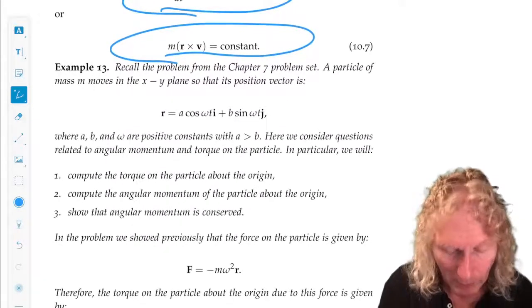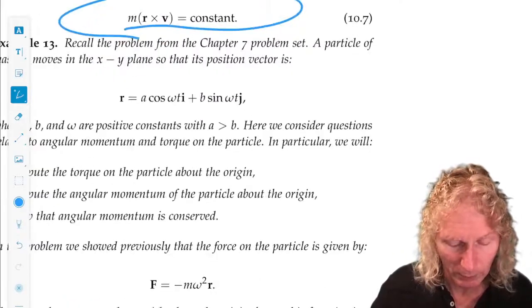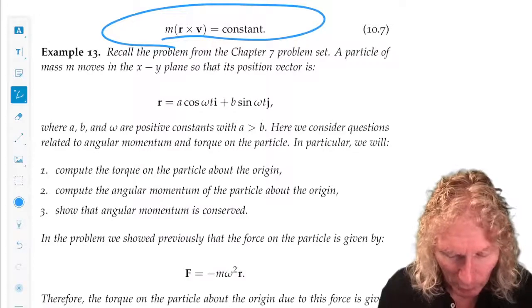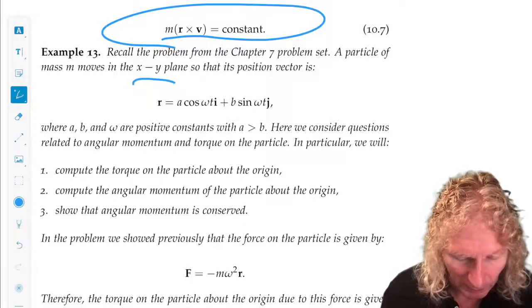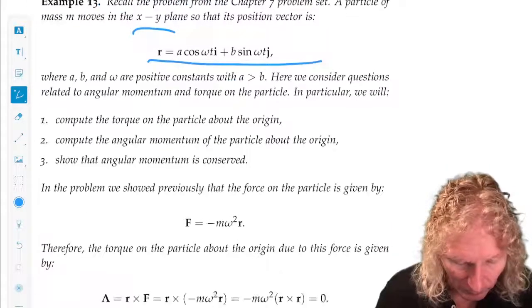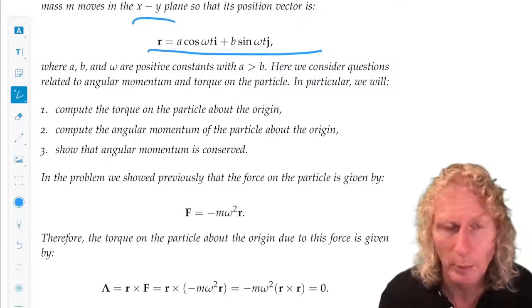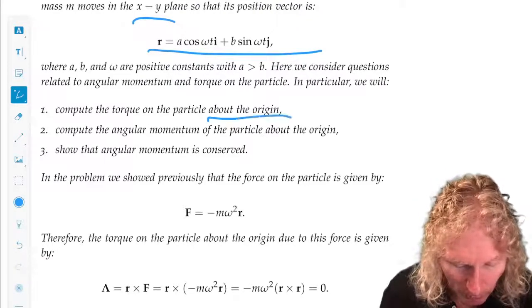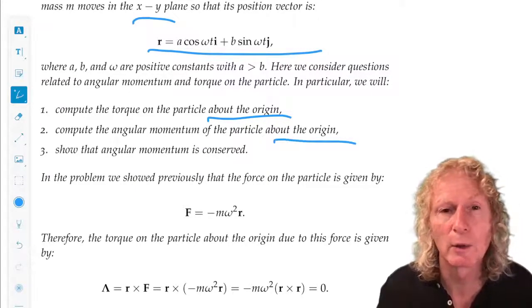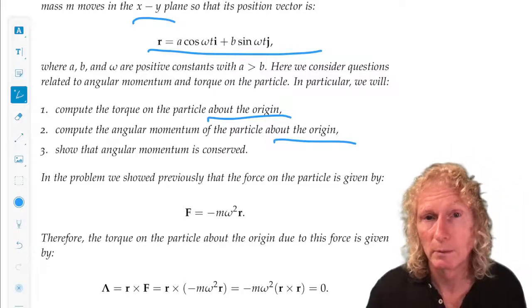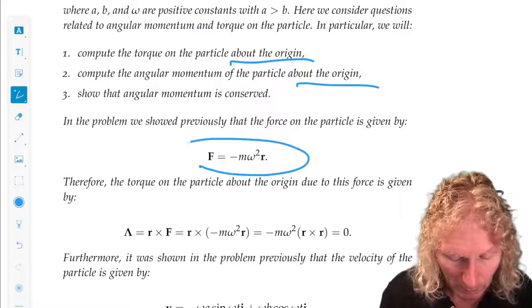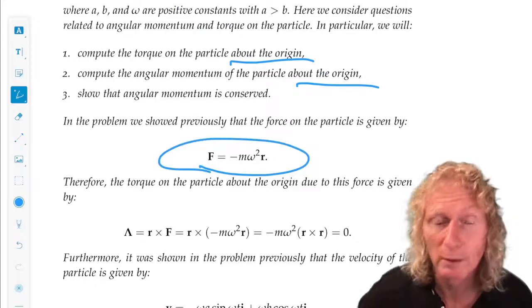Let's look at an example. We've seen this example before. Now we're going to look at different aspects of the example. A particle moves in the xy plane, and this is the position vector. We know that it moves on an ellipse. The question is, compute the torque on the particle about the origin, compute the angular momentum of the particle about the origin, and show that the angular momentum is conserved.